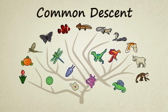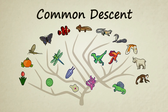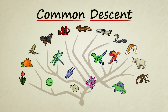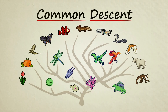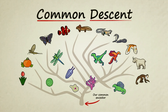Common descent is the idea that all living things on Earth are related — they descended from a common ancestor. Through the gradual process of descent with modification over many, many generations, a single original species is thought to have given rise to all the life we see today.